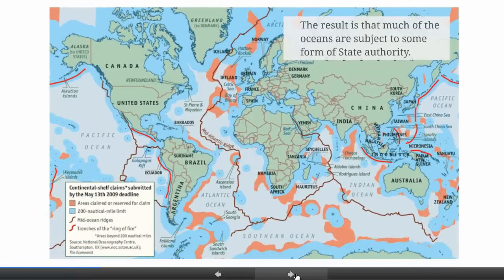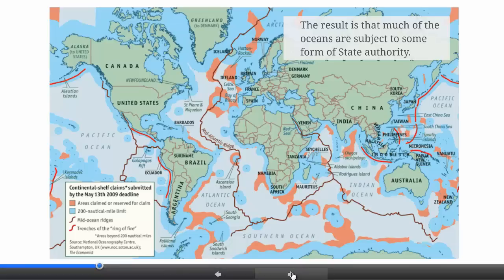Much of the oceans are subject to some form of state authority. We have here a map prepared by the National Oceanography Centre of the University of Southampton that shows in light blue the areas generated as 200 nautical mile exclusive economic zones. These extend a long way from the coast where there are islands capable of generating those zones. The orange areas indicate potential continental shelf claims extending beyond the 200 nautical mile limits. The light blue area is the high seas, which — just because it's not subject to national authority — doesn't mean it's free from rules of the law of the sea.